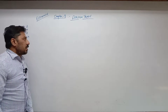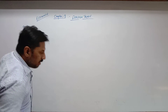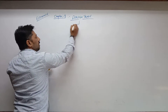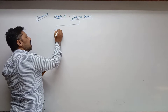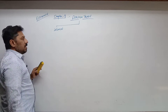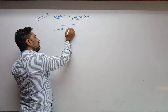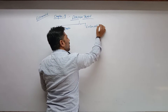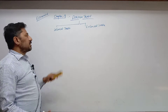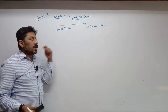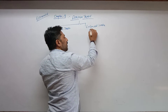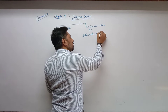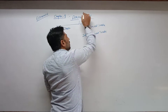Trade we already know — trade is of two types: one is internal trade and the other is foreign trade. Internal trade is also known as domestic trade, and external trade is also known as international trade or foreign trade.